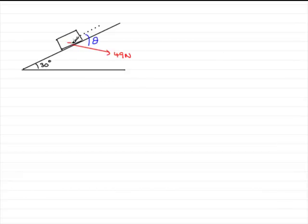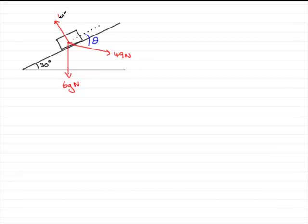The other thing we need to do is put on all the other forces. It's got a weight — that would be 6g because it's a mass of 6 kilograms, so that's 6g newtons acting downwards. There's also going to be a reaction perpendicular to the plane, so we'll call that R newtons acting away from the plane.